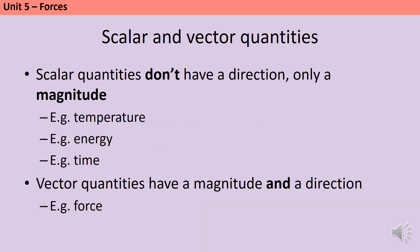Let's start with a bit of revision. What is the difference between scalar and vector quantities? All of the quantities in physics — all of the numbers that we do calculations with — can be split into scalars and vectors. Scalar quantities don't have a direction; they only have a magnitude, so for instance temperature or energy or time. Vector quantities have a magnitude and a stated direction, so if you need to change the direction and go back the way you came, you have to use a minus number. Force would be a good example of this.